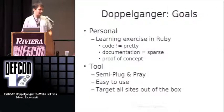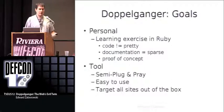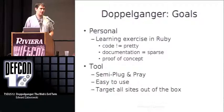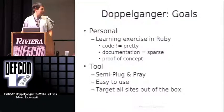I'm going to start talking about Doppelganger, the tool I wrote to do this kind of stuff. When I started writing it, I wrote it as a personal exercise to learn Ruby. The code isn't pretty and the documentation is sparse, but that's a work in progress. I also wrote it as a proof of concept, so some things might not always work. But if you find something wrong with it, feel free to let me know — I won't mind making improvements.